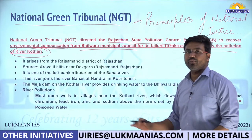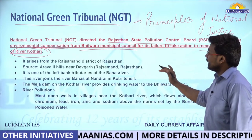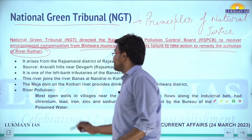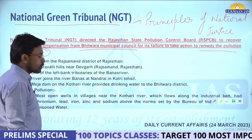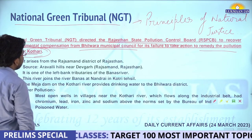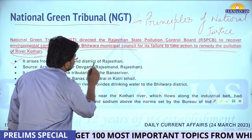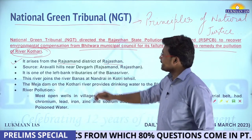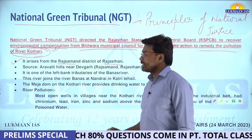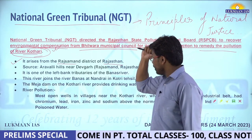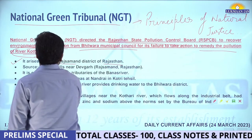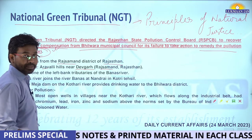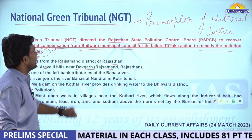This was the highlight on the basis of which this item was in news. River Kothari arises from Raj Samand district of Rajasthan. Its source is the Aravalli Hills near Devgad, Raj Samand, Rajasthan.